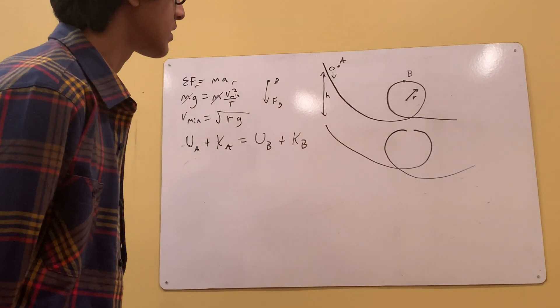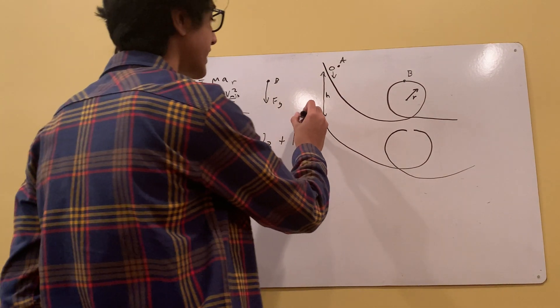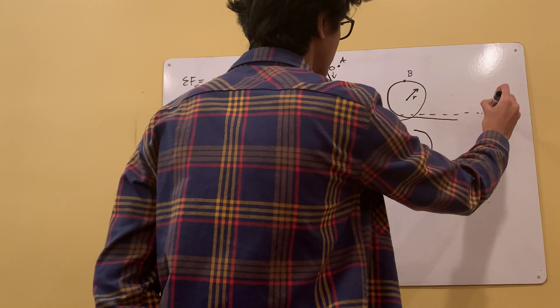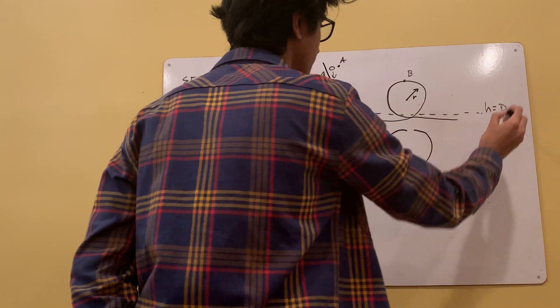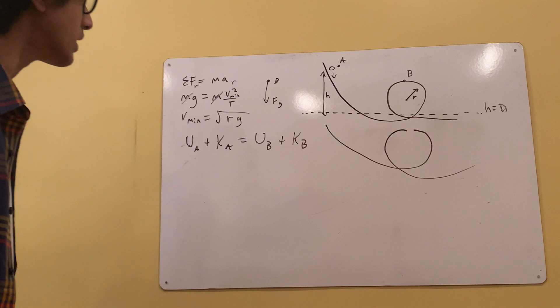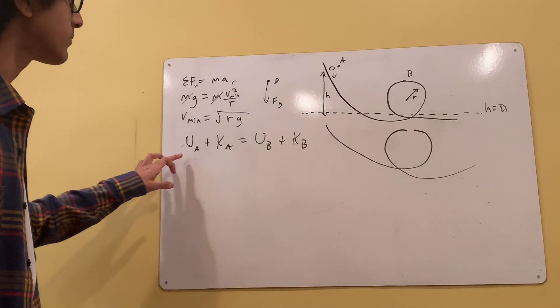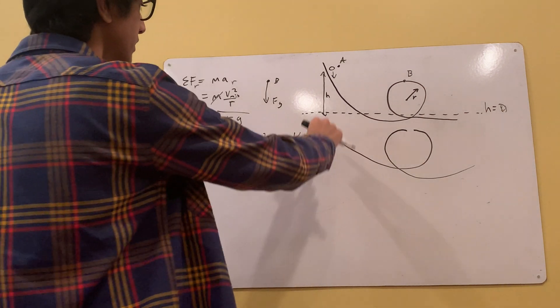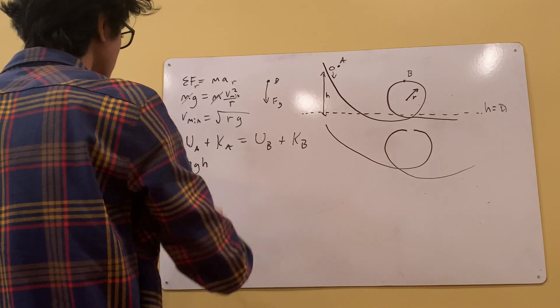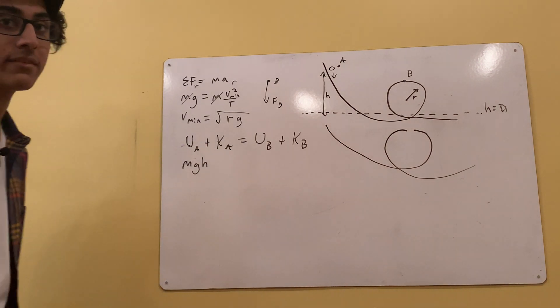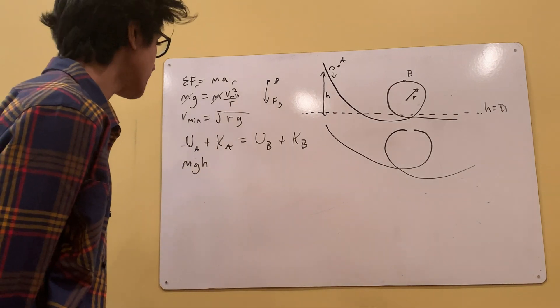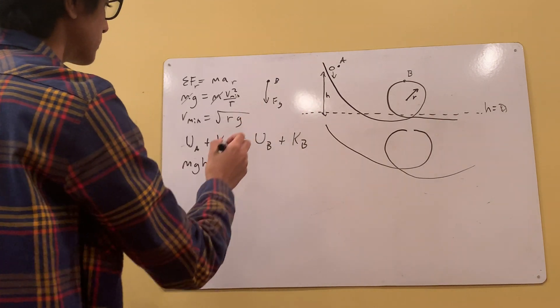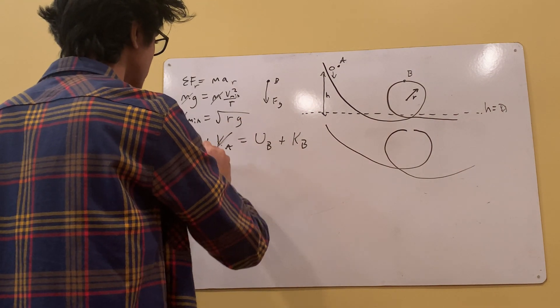This is where H will equal to 0. Alright, so what will be the potential energy? It's just going to be Mg times the displacement, which is H. The potential energy due to gravity is always Mgh times the height. And our height is just going to be H for that. Plus the kinetic energy, and this is starting from rest, so we don't have any kinetic energy at this point. We can cross that out.